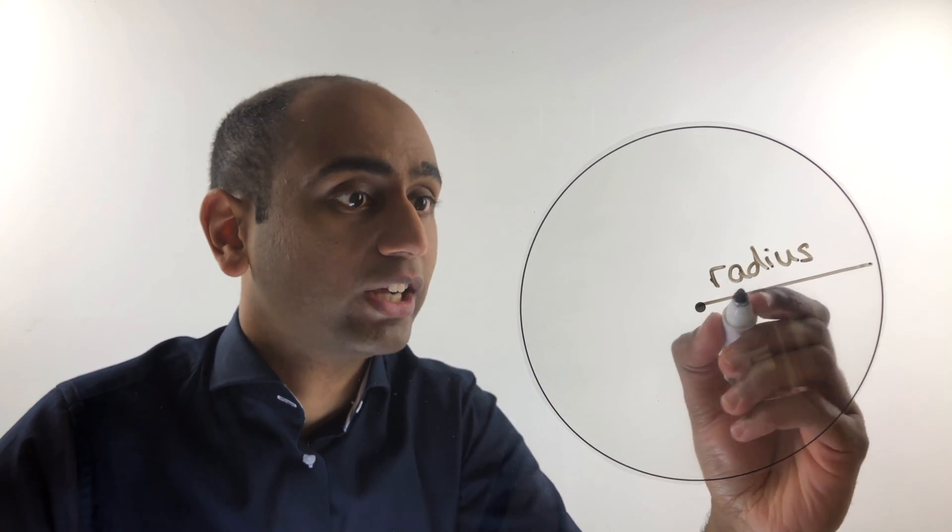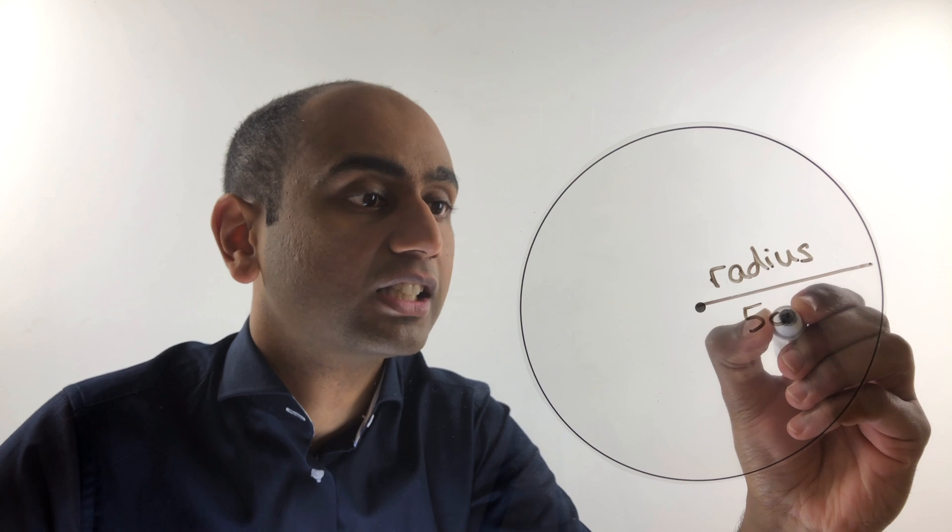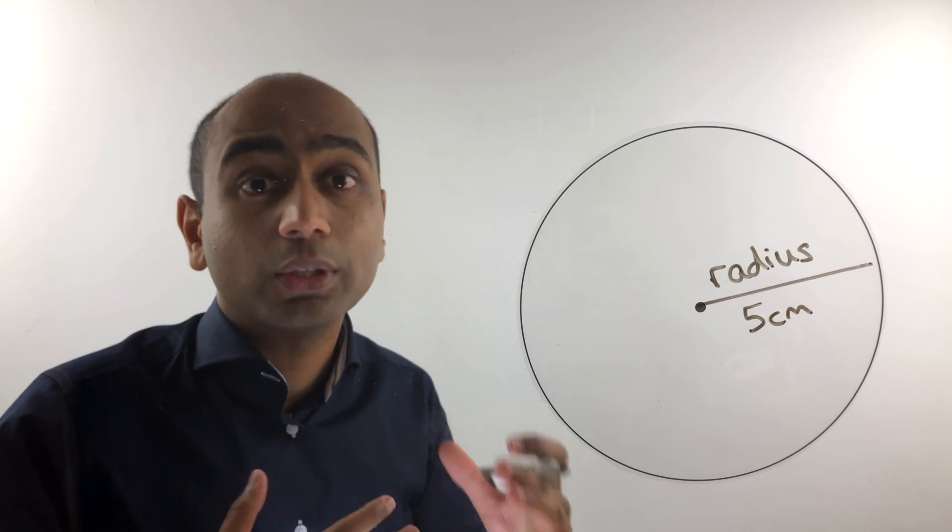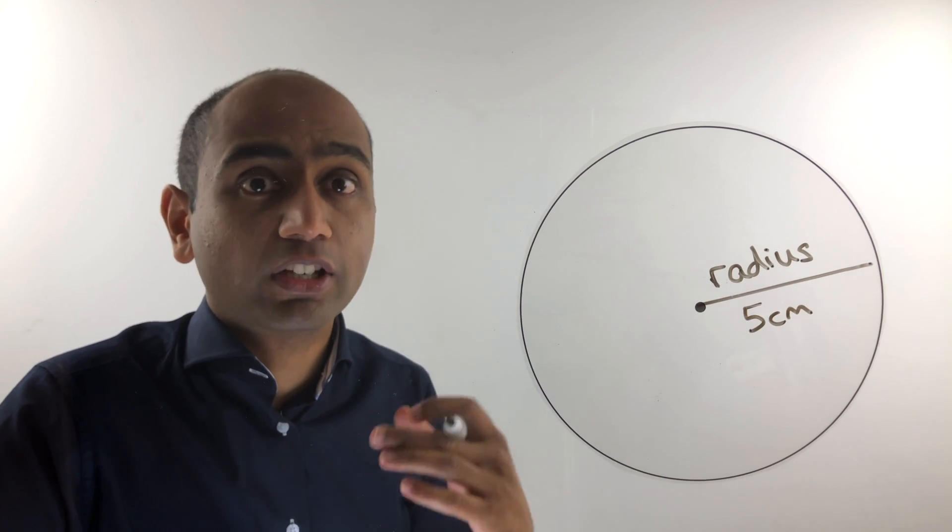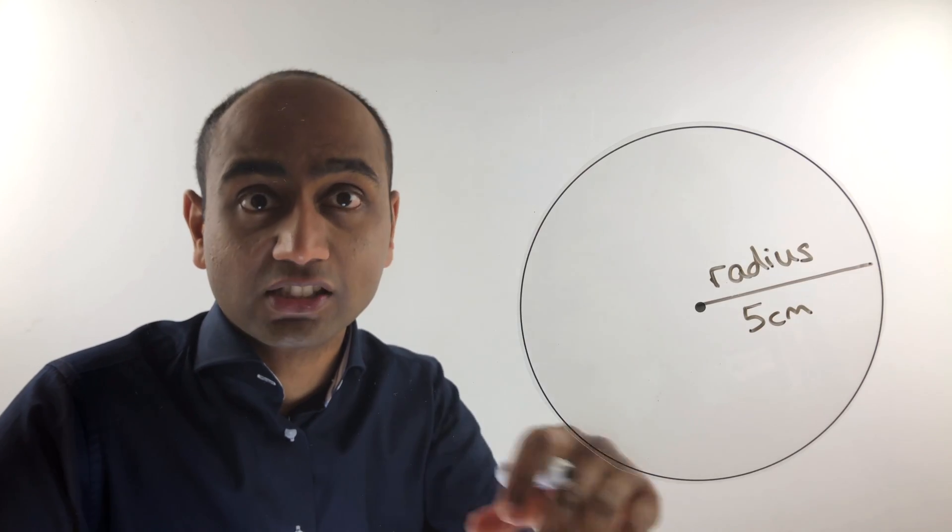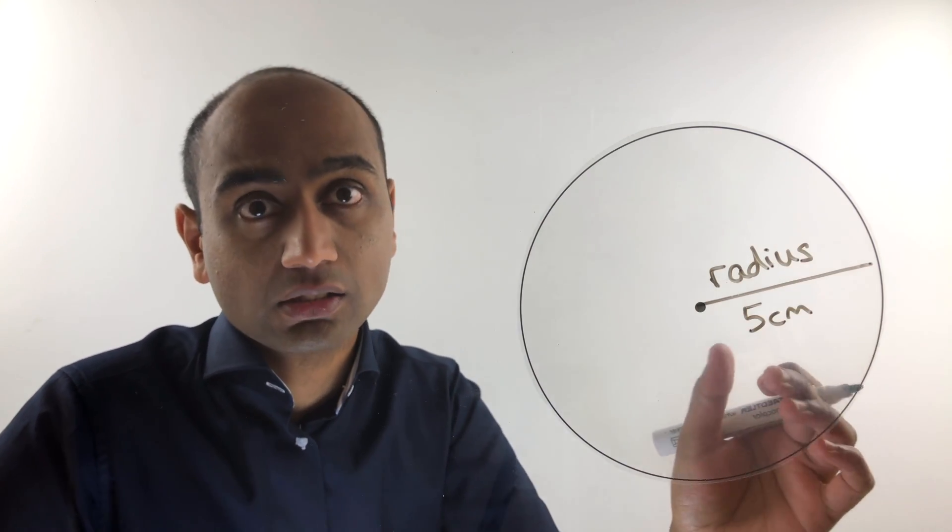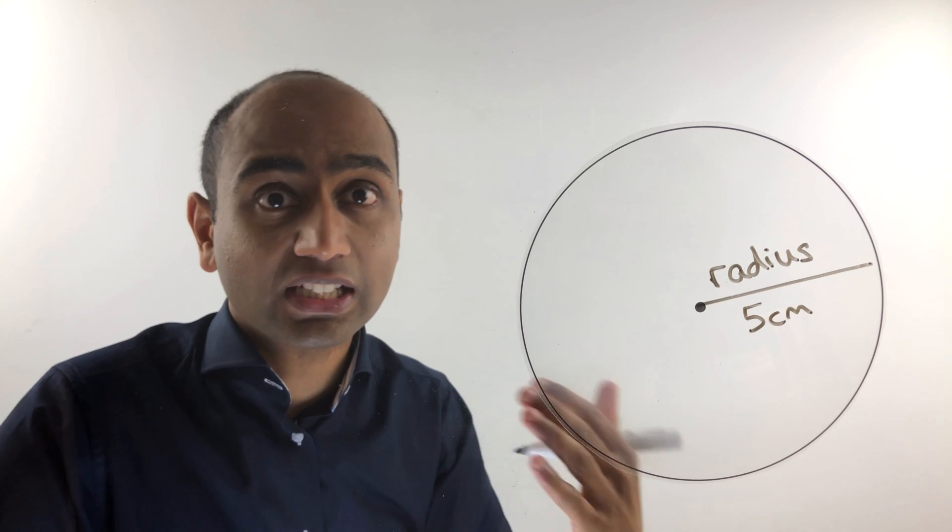So for example in this circle the radius might be 5 centimetres. So it depends on context. If someone were to ask you for the radius of this circle, they probably mean the length of the radius, in which case you would say 5 centimetres.